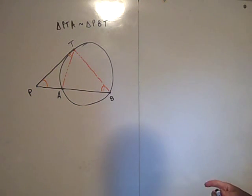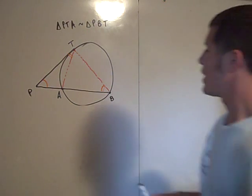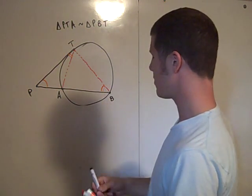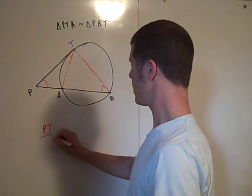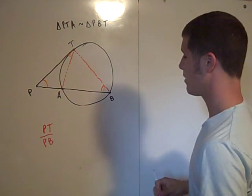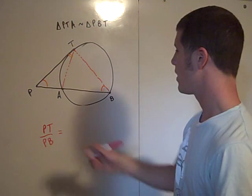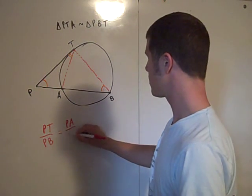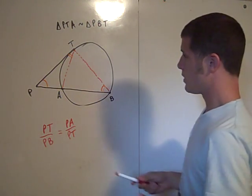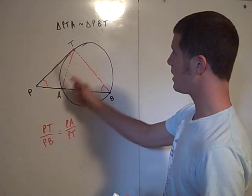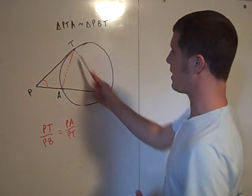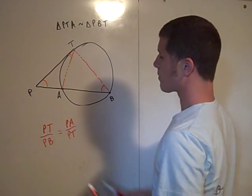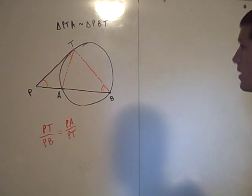So now we can set up a proportion. We can say that PT is to PB as PA is to PT. So you have this small triangle PTA and the bigger triangle PBT. The long side is to the long side as the short side is to the short side. That's right.